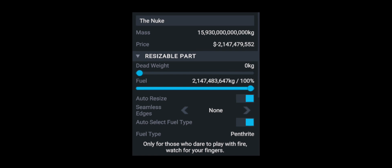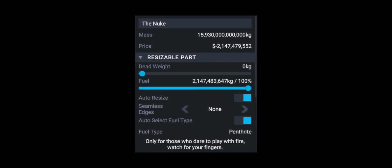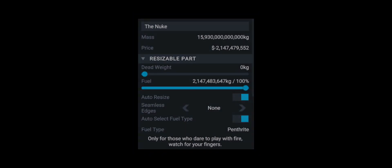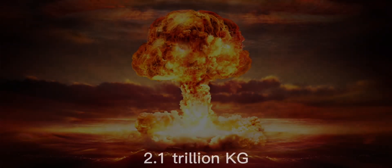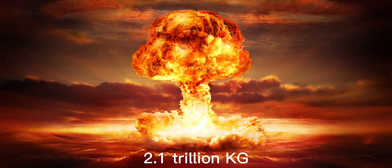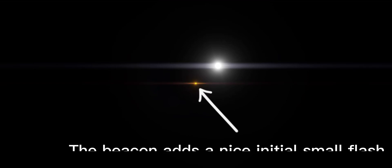First of all, you want to XML edit the fuel tank and put an insane amount of pantherite in it. For example, my fuel tank has 2.1 trillion kilograms of pantherite. Next, I added a beacon and this served the purpose of giving a really nice flare when the explosion starts.